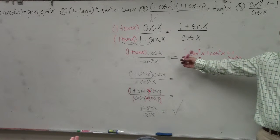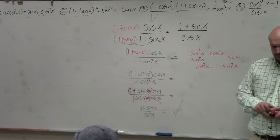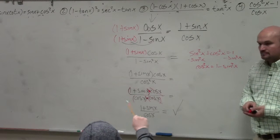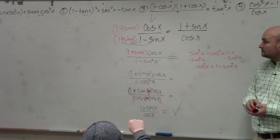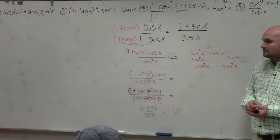I got to the point where I said this: 1 plus sine of x times cosine of x over 1 minus sine of x. What would be an identity? Sine squared of theta, which is x, plus cosine squared of theta.